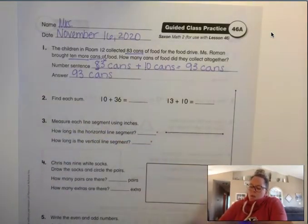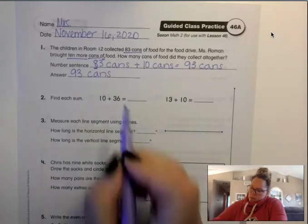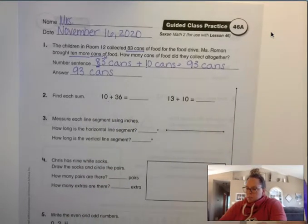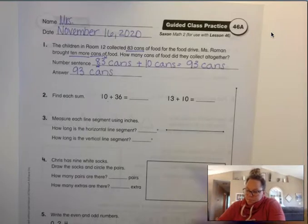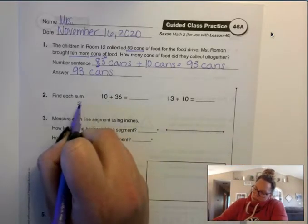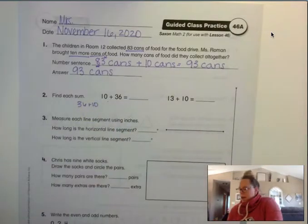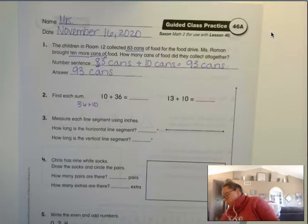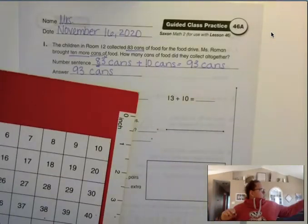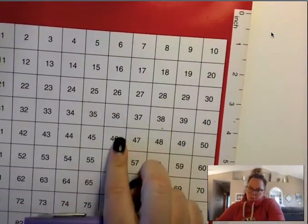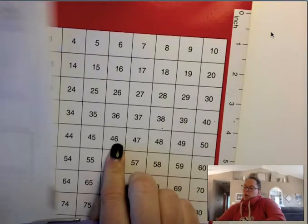Number 2. Find each sum: 10 plus 36 and 13 plus 10. 10 plus 36, so it's the same thing as 36 plus 10, right? I can grab out my math folder if I need to. I'm grabbing mine. So I'm going to look here.